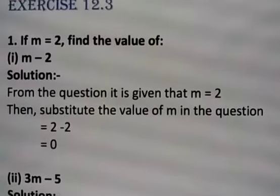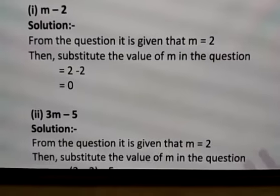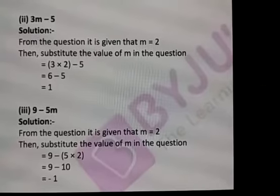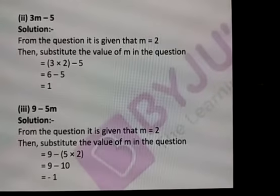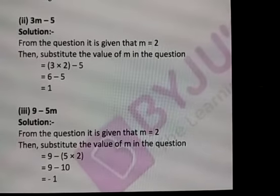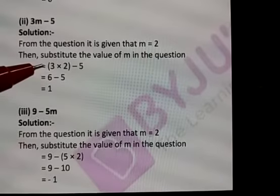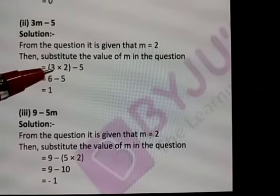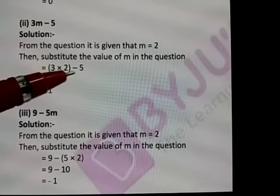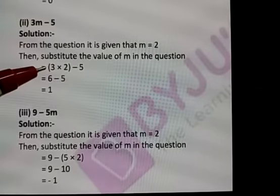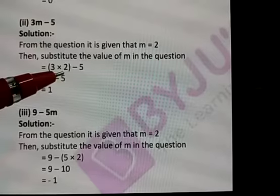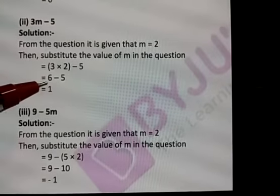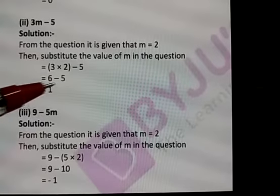The second one: 3m minus 5. What is the m value? m value is given as 2. We have to substitute the value of m in the given expression. 3 into 2 minus 5 — in the place of m I put 2, and the 5 is as it is. 3 into 2 is 6, minus 5 is 1.